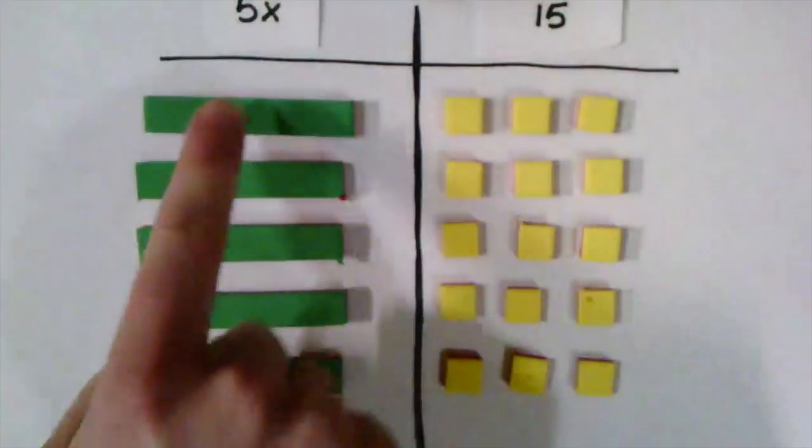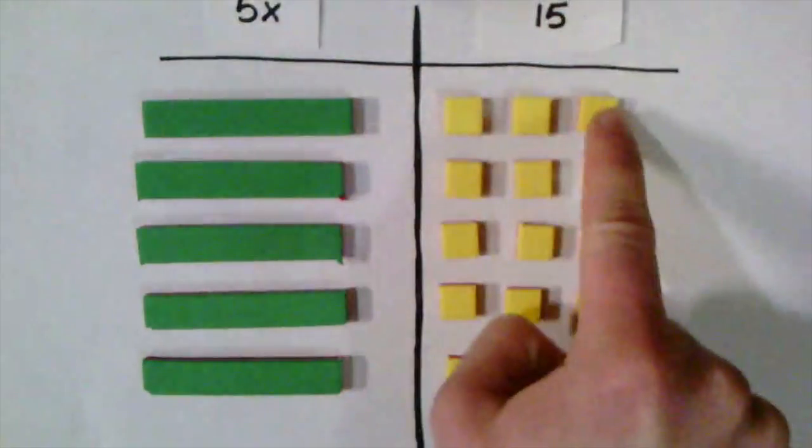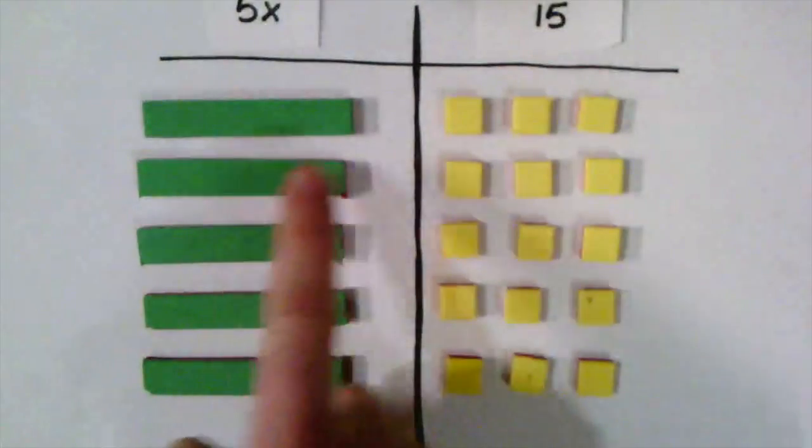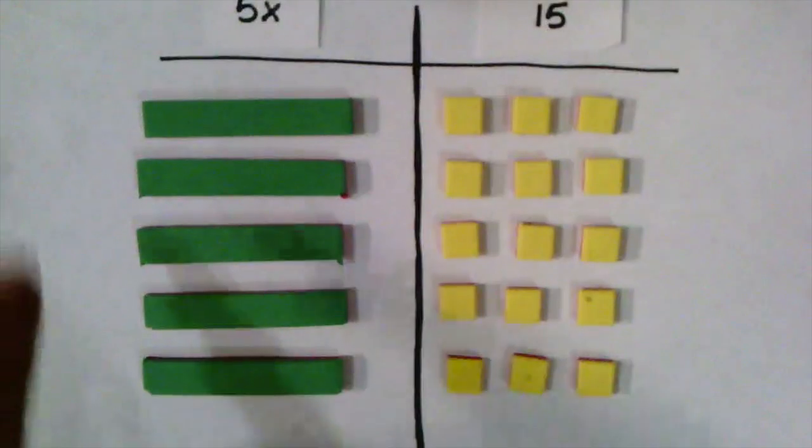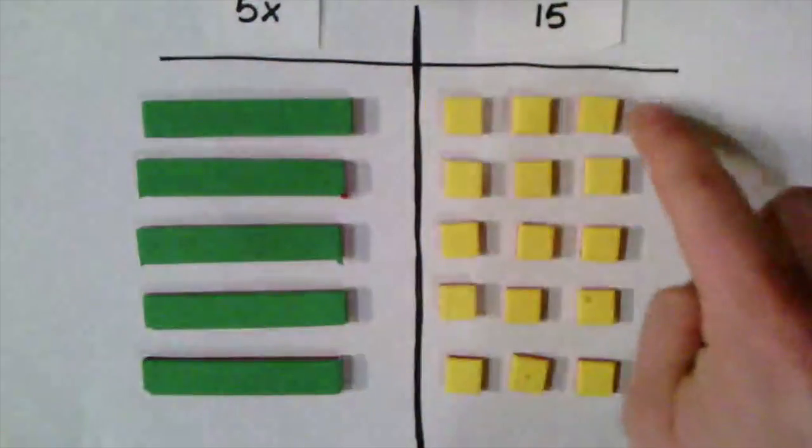When I line them up this way, it's very easy to see that this x is equal to the 3 on this side. This x is equal to this 3. And it does that all the way down. This means that 1x is going to be equal to 3.